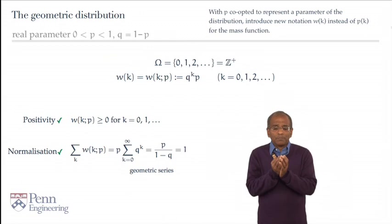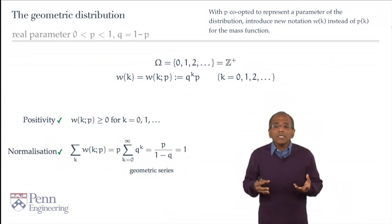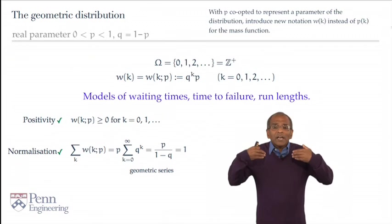This mass function, this distribution, arises in models of waiting times, in models of run lengths when we have sequences of some event happening before something else happens. And again, this is one of the fundamental distributions.